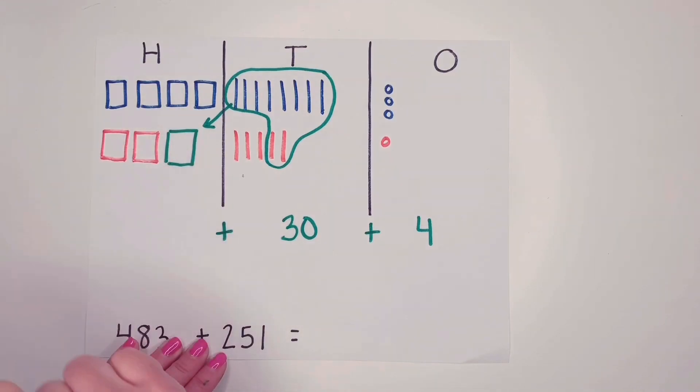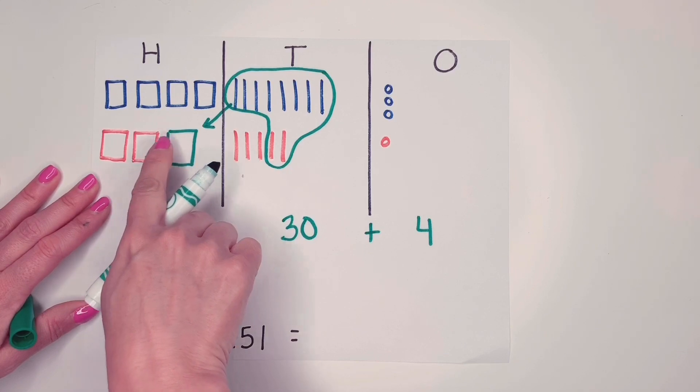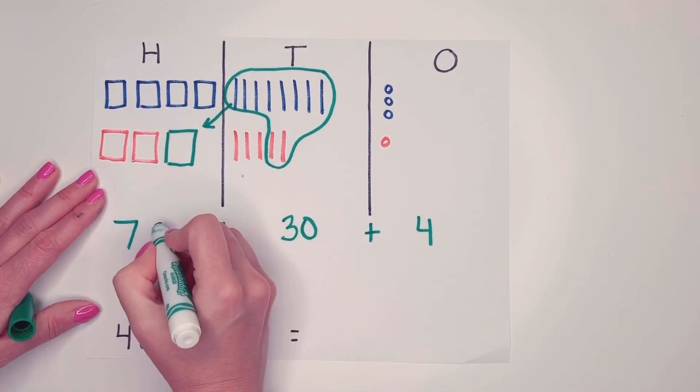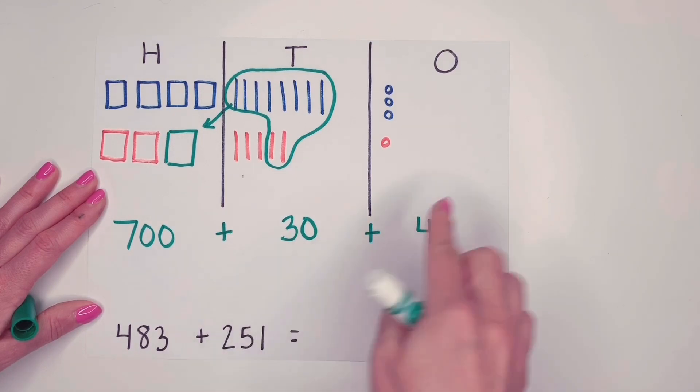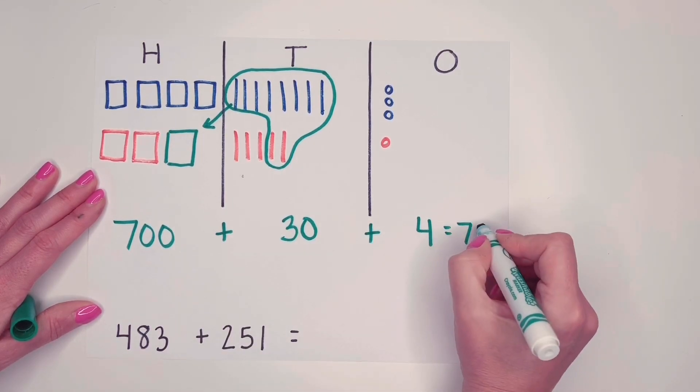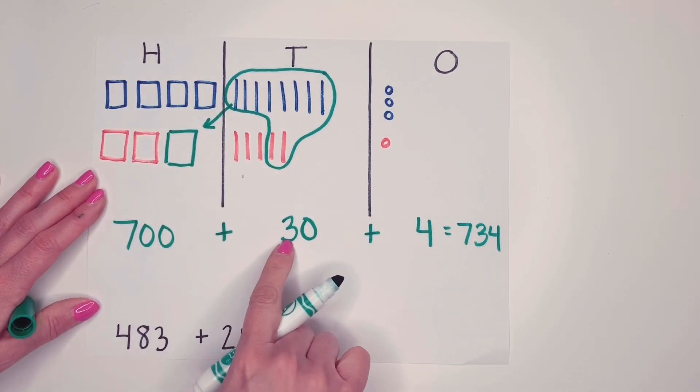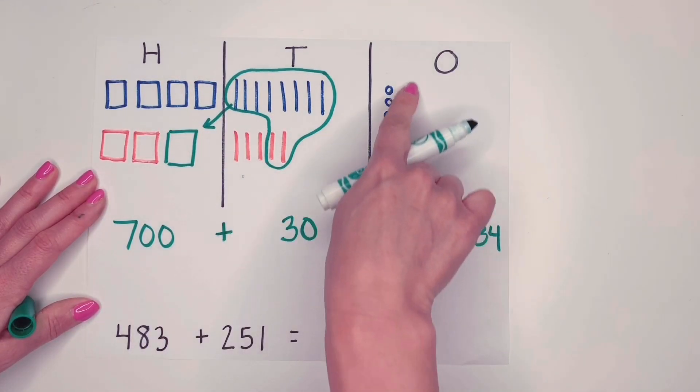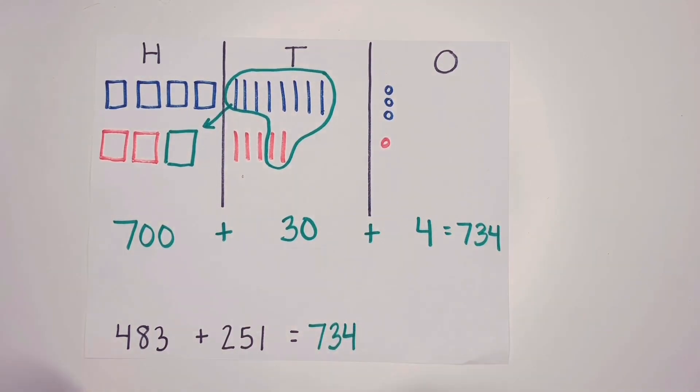And now I can look at my hundreds. I have one hundred, two hundred, three hundred, four hundred, five hundred, six hundred, seven hundred. So seven hundred plus thirty plus four is seven hundred thirty-four. We know we have seven hundreds here. We have three tens and we have four ones. So seven hundreds, three tens, and four ones. So 483 plus 251 is seven hundred thirty-four.